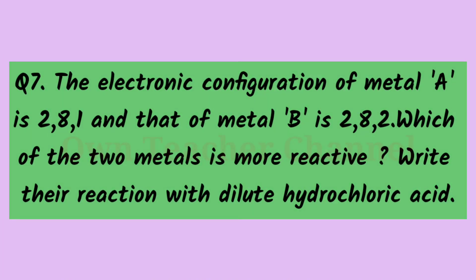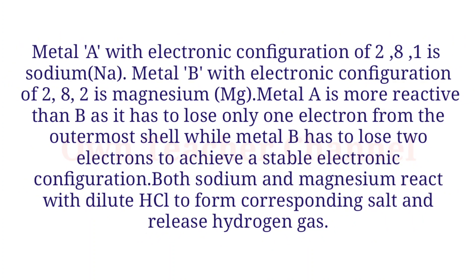Question 7: The electronic configuration of metal A is 2,8,1 and that of metal B is 2,8,2. Which of the two metals is more reactive? Write their reaction with dilute hydrochloric acid. Metal A (sodium) has to lose one electron and Metal B (magnesium) has to lose two electrons to achieve a stable electronic configuration. Therefore, sodium is more reactive than magnesium.